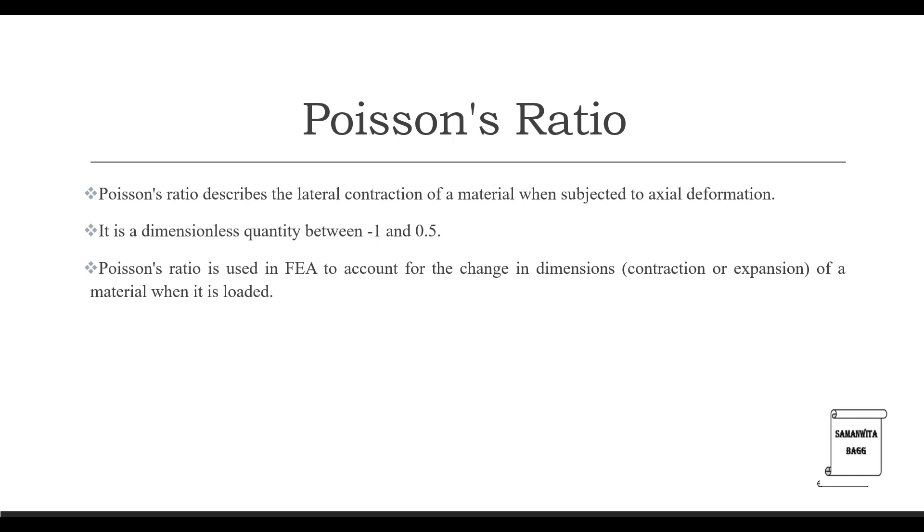The next property which is highly important for static or dynamic structural analysis is Poisson's ratio. Poisson's ratio describes the lateral contraction of a material when subjected to axial deformation. It is a dimensionless quantity between minus 1 and 0.5. Poisson's ratio is used in FEA to account for the change in dimensions, contraction or expansion of a material when it is loaded.